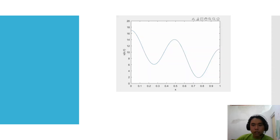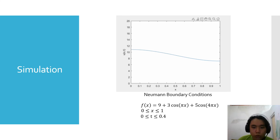Then, the second case, I use the Neumann boundary condition with the function 9 plus 3 cos pi x plus 5 cos 4 pi x with x interval from 0 to 1, and then time interval from 0 to 0.4, and this is how it looks.